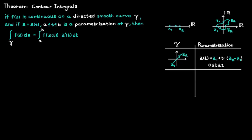In general when doing these parameterizations, you always want the lower bound of t inserted into the function to give the starting point, and the upper bound of t to give the end point — this way you always preserve the direction of the curve. If instead the path is a circle, then the parameterization is going to be equal to c0, which is the center of the circle, plus r, the radius, times e raised to the power of i times t.